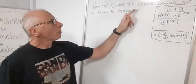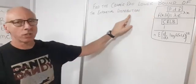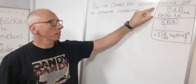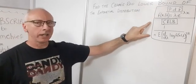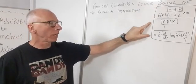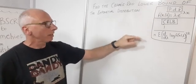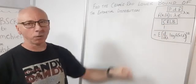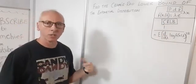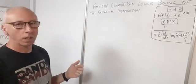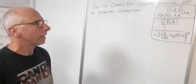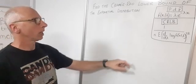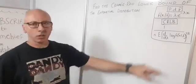In this video I'm going to show you how to take the Cramér-Rao lower bound of the exponential distribution. The exponential distribution PDF and the formula for the Cramér-Rao lower bound are shown here. This is the third or fourth video in a sequence on the Cramér-Rao lower bound — check the link below for other examples. It's all about finding the minimum variance of a particular distribution.